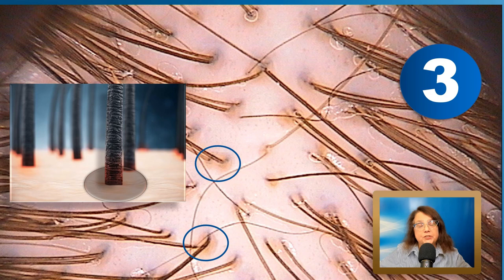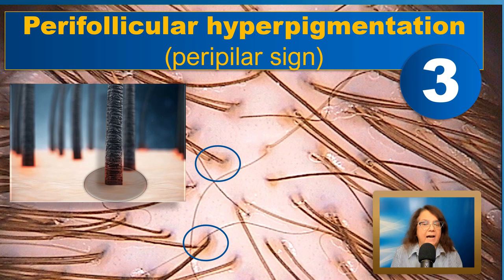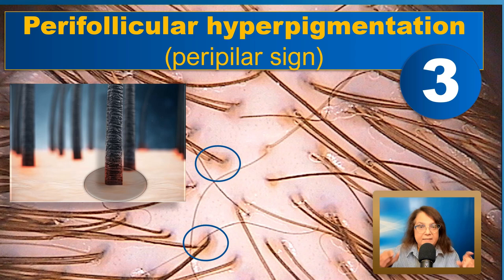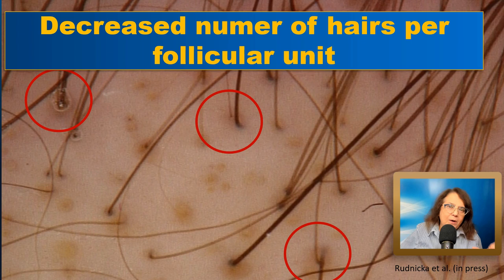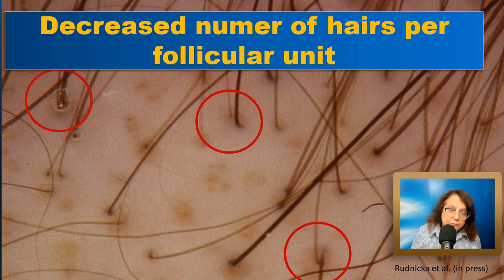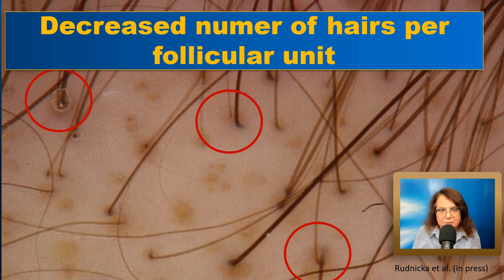A third feature typical for androgenetic alopecia is the peripilar sign, or perifollicular hyperpigmentation. This sign has been shown to be associated with an inflammatory infiltrate around the hair follicles, and I believe it is a poor prognostic factor. Also quite common in androgenetic alopecia is a decreased number of hairs per follicular unit; however, this is not very useful for differential diagnosis, as it is also seen in telogen effluvium, which is very common.